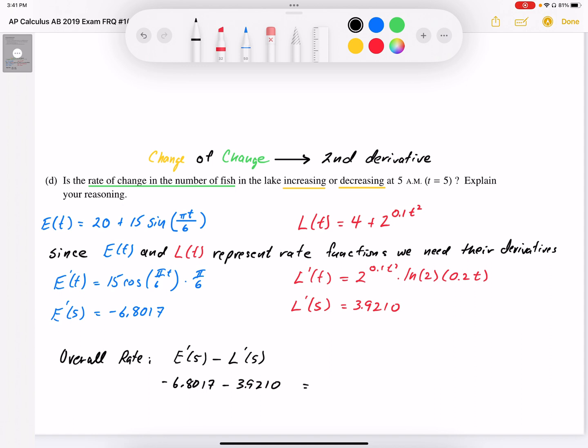The overall rate works out to be negative 10.7, looks like 7228, approximately.